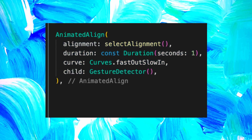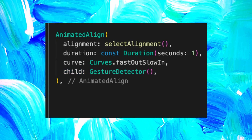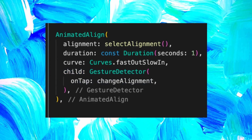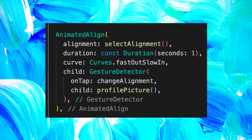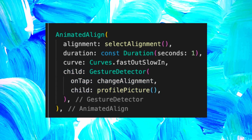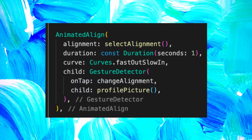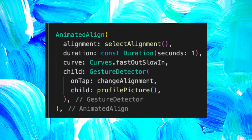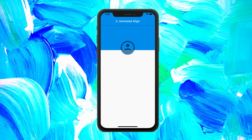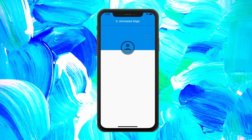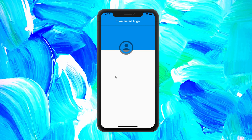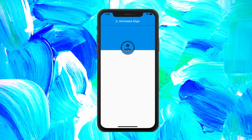For the child, we use the gesture detector with the onTap function that will change the alignment. We used a profile picture inside the child of the gesture detector. For this example, the alignment of the profile picture is currently on the center. And when we press on it, the alignment will move to the left.